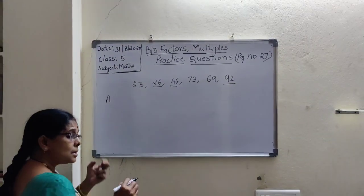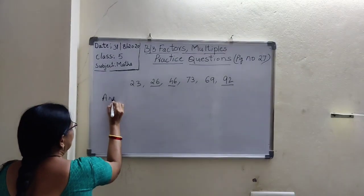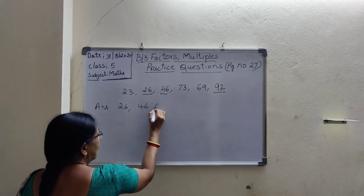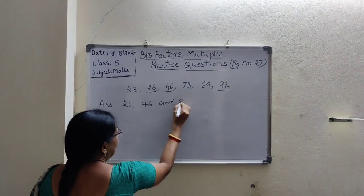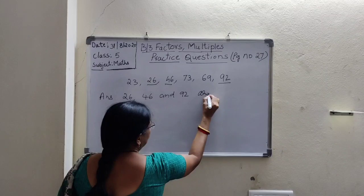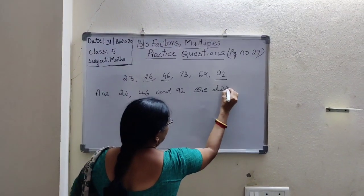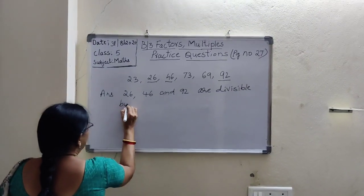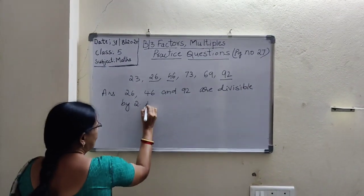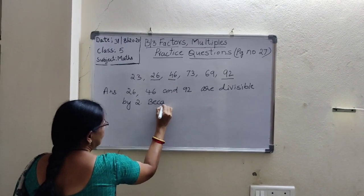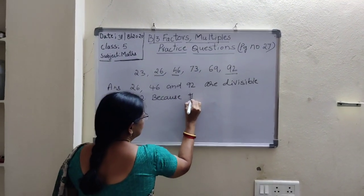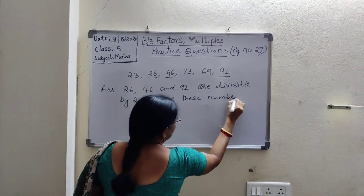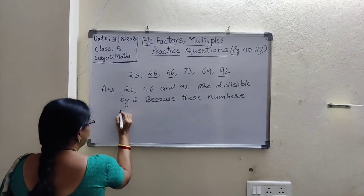You have to write the answer in a sentence. 26, 46, and 92 — so these numbers are divisible by 2.